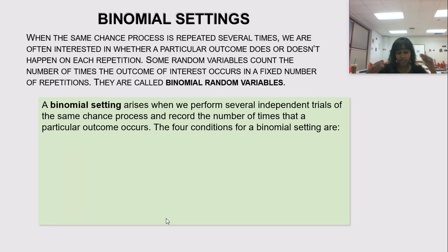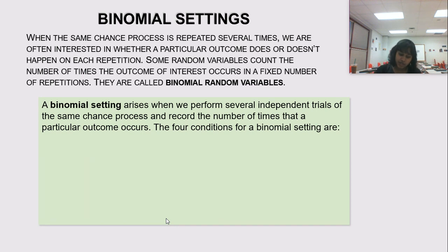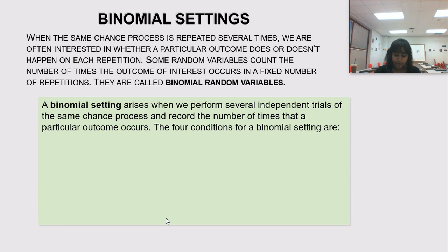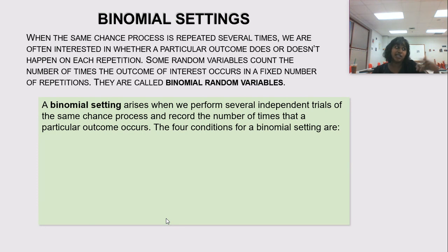If I consider these three scenarios, what do I notice they have in common? There is a fixed number — I tossed my coin five times, spun the roulette wheel eight times, took a sample of 100 babies. I was looking for a fixed success every time: heads, red slot, and females. And each trial was independent. Every time I flipped that coin, it reset — the next outcome wasn't dependent on the first. The next baby's birth has nothing to do with the first baby's birth.